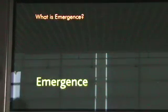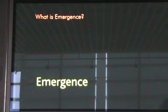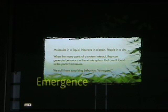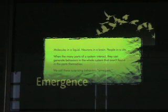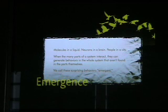This definition was taken directly from the homepage of the website. If you consider some example systems like molecules in a liquid, neurons in a brain, people in a city — when the many parts of the system interact, they can generate behaviors in the whole system that aren't found in the parts themselves. We call these surprising behaviors emergence. For example, molecules in a liquid: if the liquid freezes, the properties on the macroscopic scale have completely changed — you've gone from something that pours to something that's solid, yet the molecules are still the same. So the properties of the liquid or the solid are not intrinsic to the parts themselves; they're emergent properties.